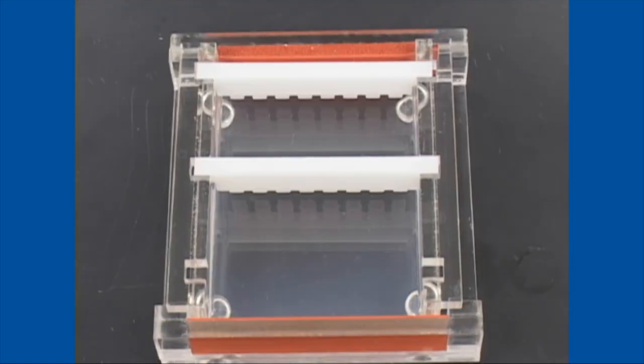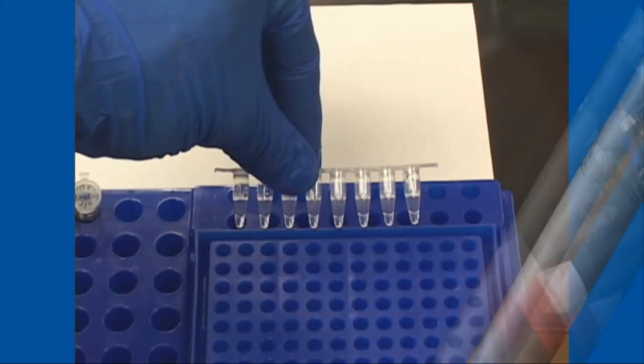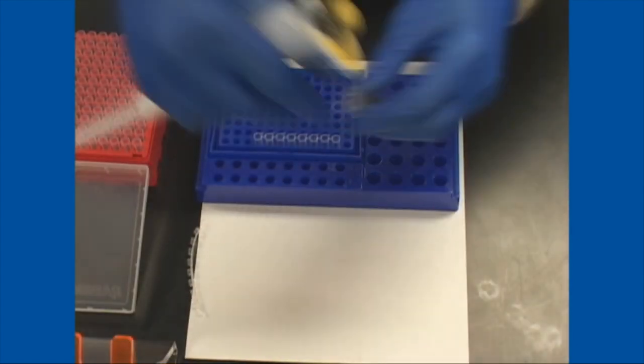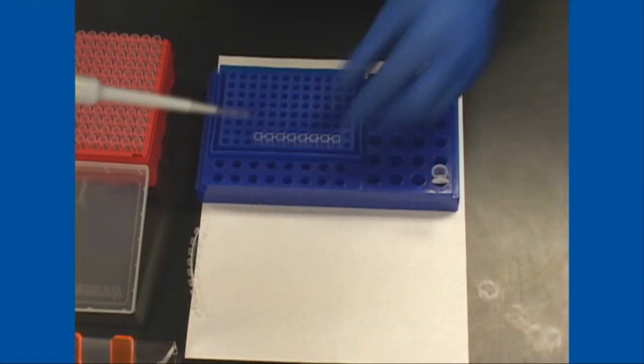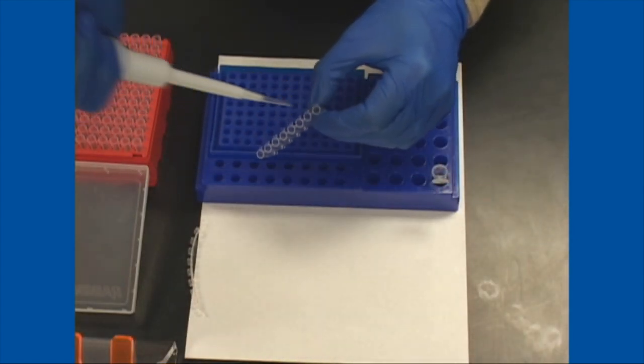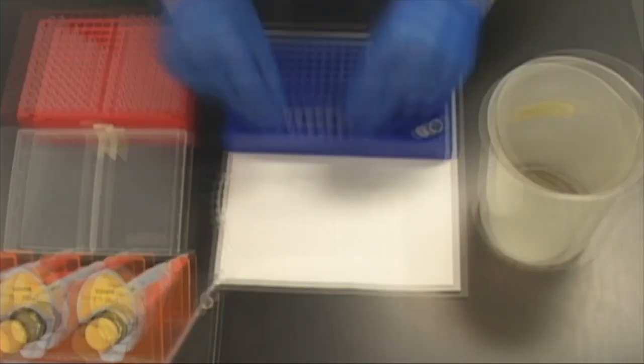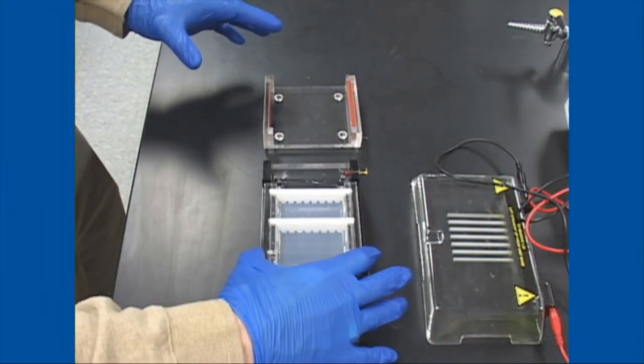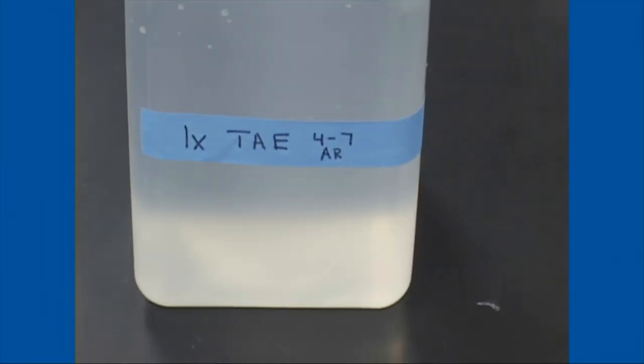Typically these are found in 10x or 6x formations. They contain weighting agents, which are typically Ficoll, Glycerol, or Sucrose. They also contain a dye or a couple of dyes that allow you to monitor the electrophoresis process.